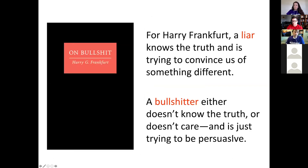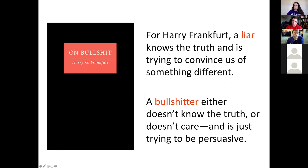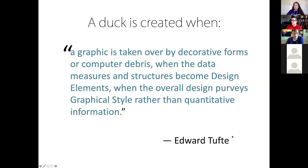We talk a lot about framing, lying, and BSing in the literature, and we find different ways — even in graphical literature — in which that happens. According to Harry Frankfurt, liars know the truth and are trying to push you away from it, whereas BSers don't really care and are just trying to persuade. So there are different kinds of graphs for each. We have several different forms that students might see, and they have a lot of fun with these.